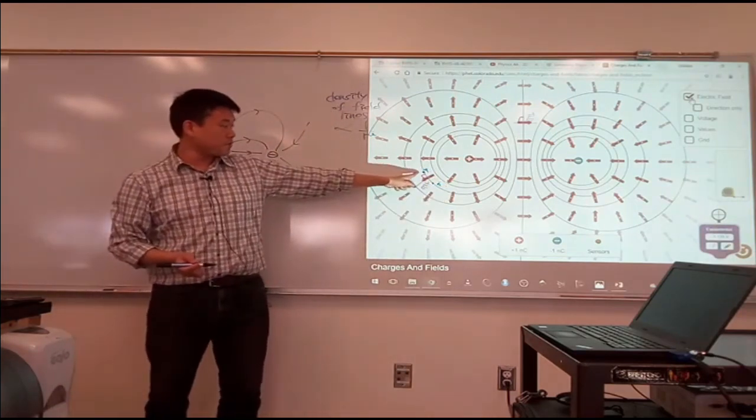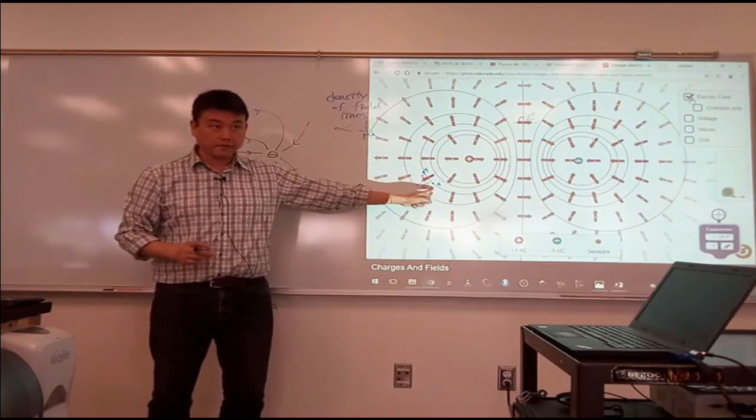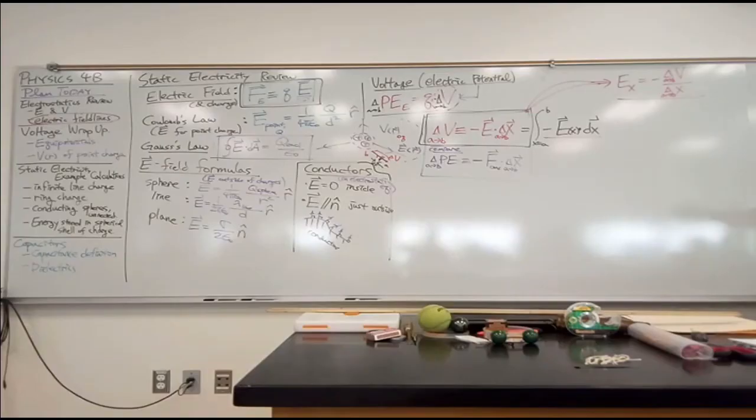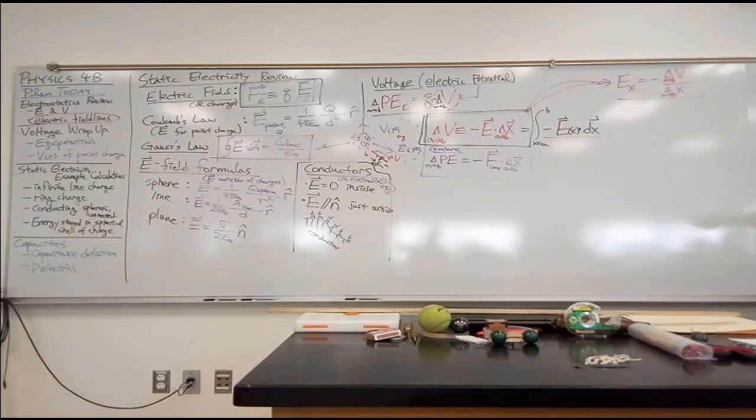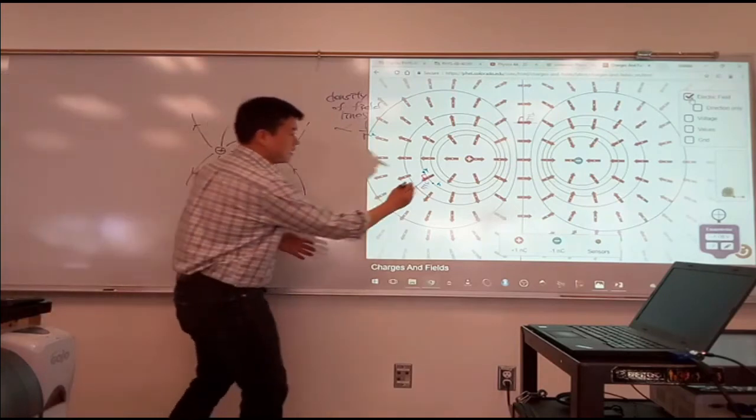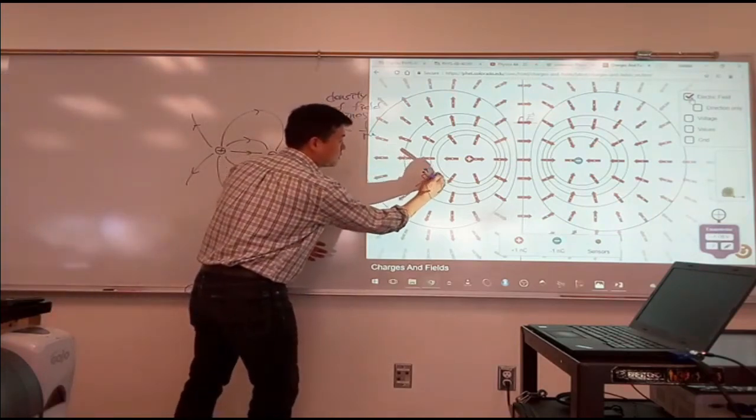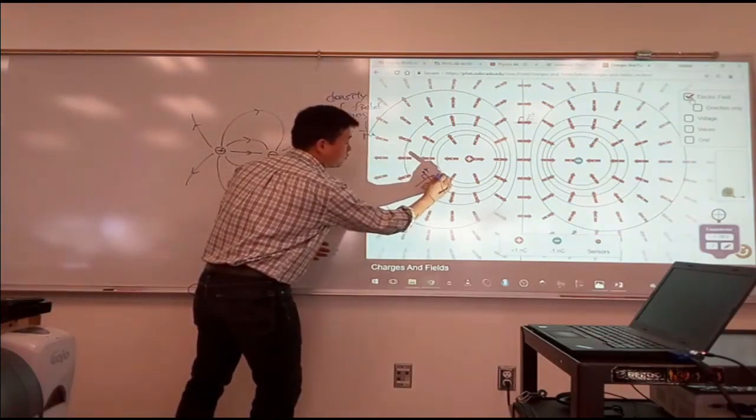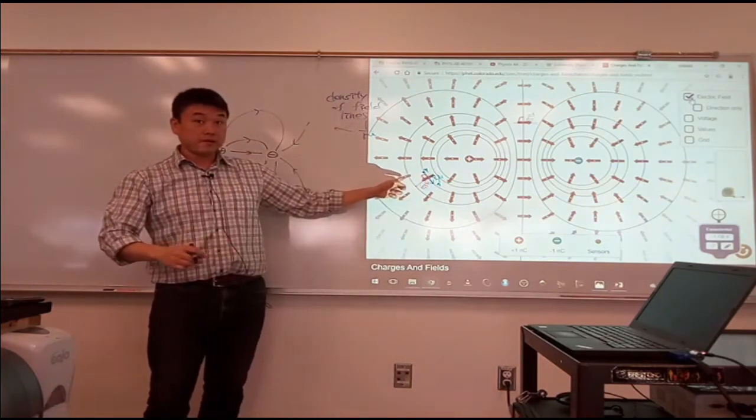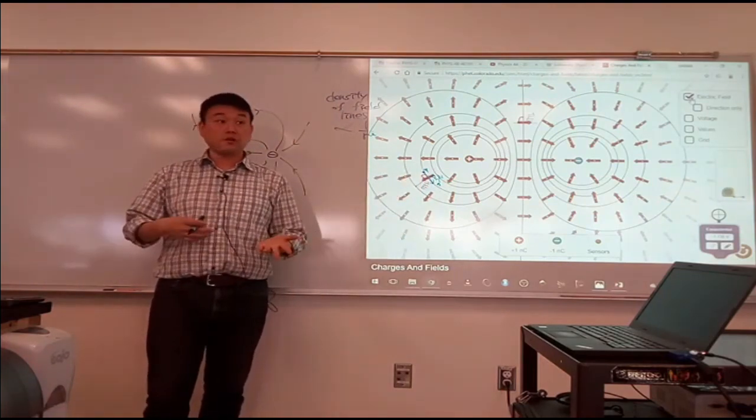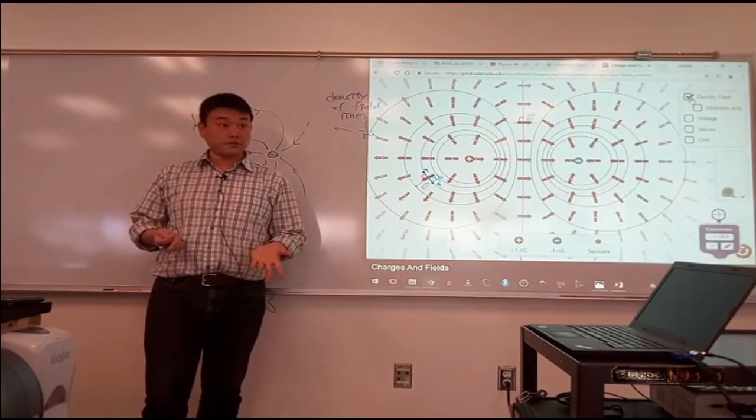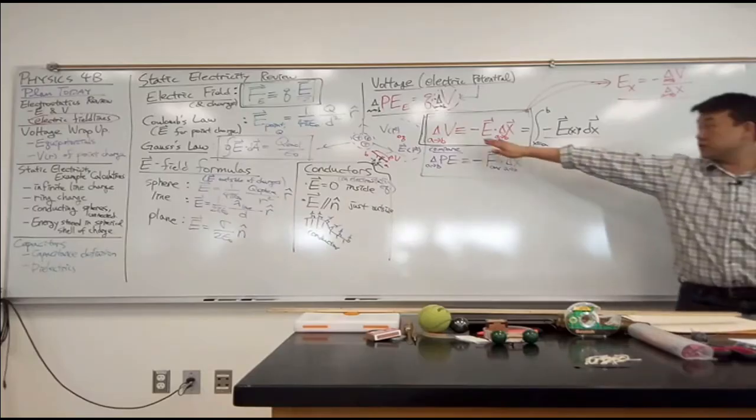If I'm going in the direction that's perpendicular to the electric field, what's going to be my right-hand side here? Zero, because the dot product will be zero, right? So, if this displacement, delta x A to B, is perpendicular to the electric field, that will guarantee that your potential voltage won't change, according to the definition here.